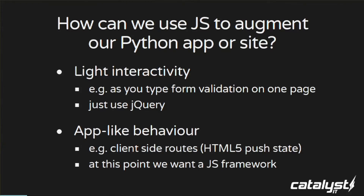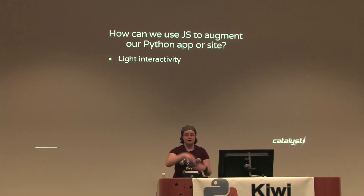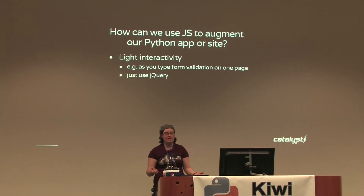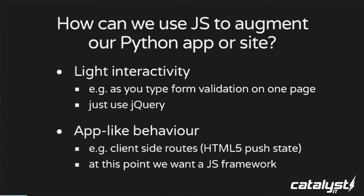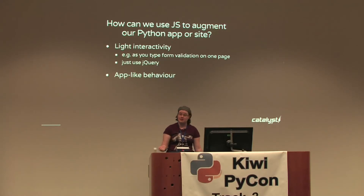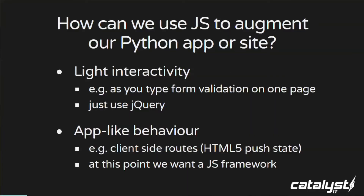Taking it as a given that you do want to use a bit of JavaScript, how can we use it to augment our site? For light interactivity — like sorting search results or validating an email address as the user types — just stick with the tried and true, something like jQuery or Mootools. There are a whole bunch of plugins you can just drop in and go. However, if you want more sophisticated, app-like behaviour — something more akin to a desktop application — you're probably going to want to look at using a JavaScript framework.